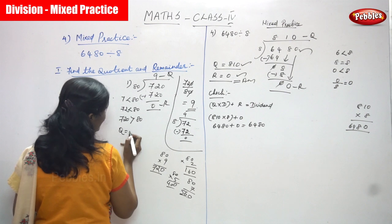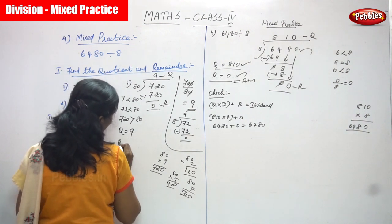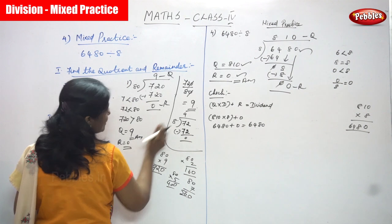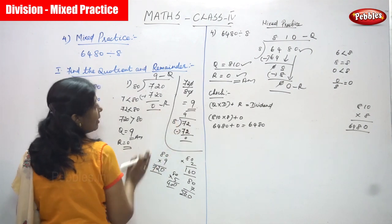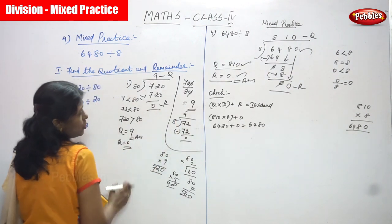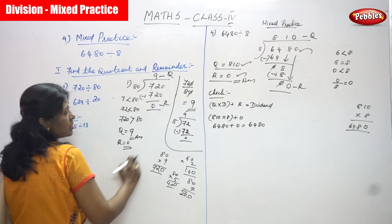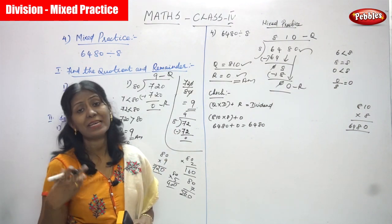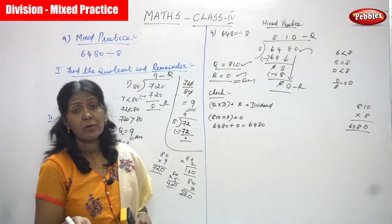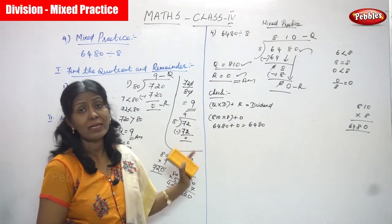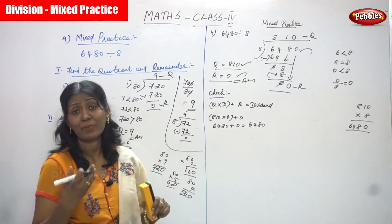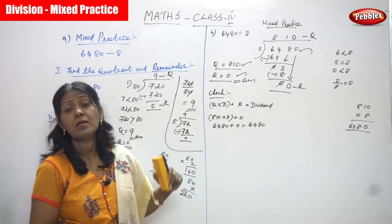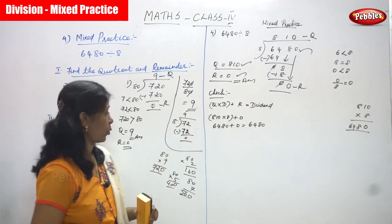The answer for this question: quotient is 9 and remainder is 0. This is a very simple method — this is the actual, original method. I taught you both methods; whichever is convenient for you, you can choose that method. I am giving a lot of practice, especially in division.